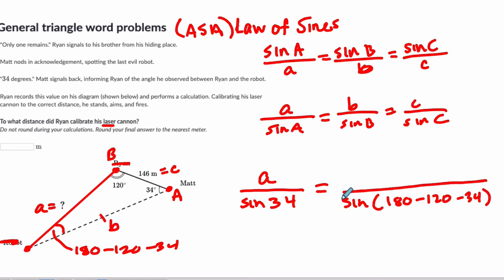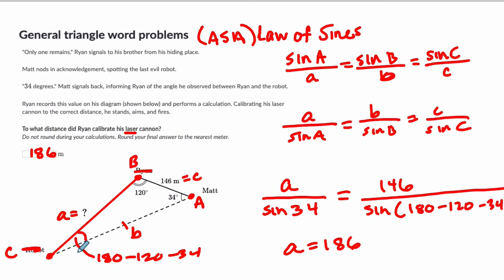And then we have side length C is 146. So take a moment, try and solve that. You should get that A in this case is 186 to the nearest meter. And that makes sense in terms of this problem. You've got 146 here. You can imagine that this might be longer. It might be 186. Okay. Hope that helped. Let's go to the next one.